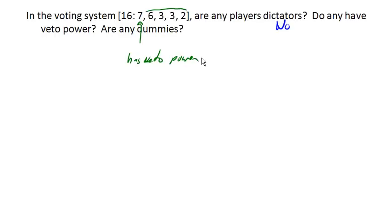They might not be the only one though. So if this player and these three players got together, they would have total weight of 7 plus 3 is 10, plus 3 is 13, plus 2 is 15. And that still would not reach quota. So this player also has veto power. The only way that quota can be reached is to have both of these people on board. Otherwise, they will not be able to reach quota. So in this case, both of those players have veto power.